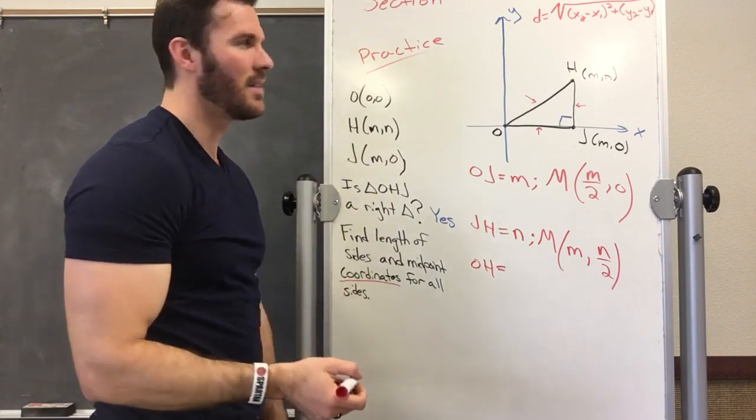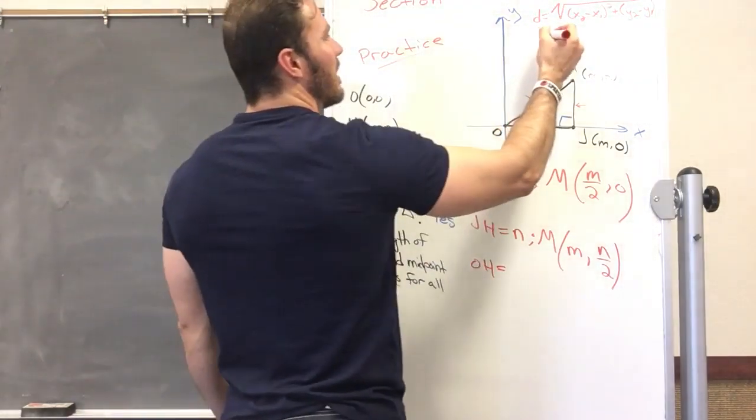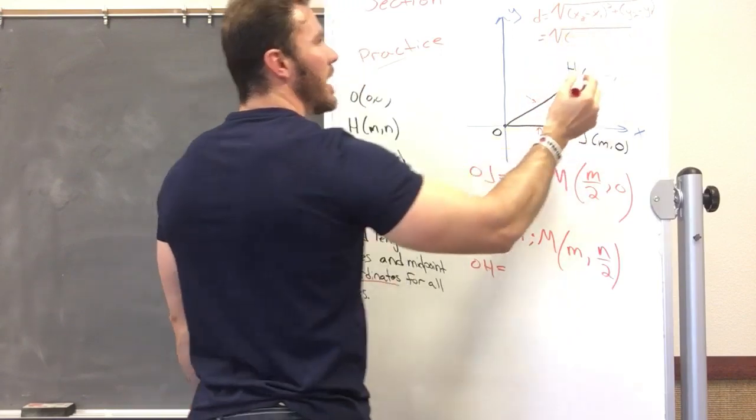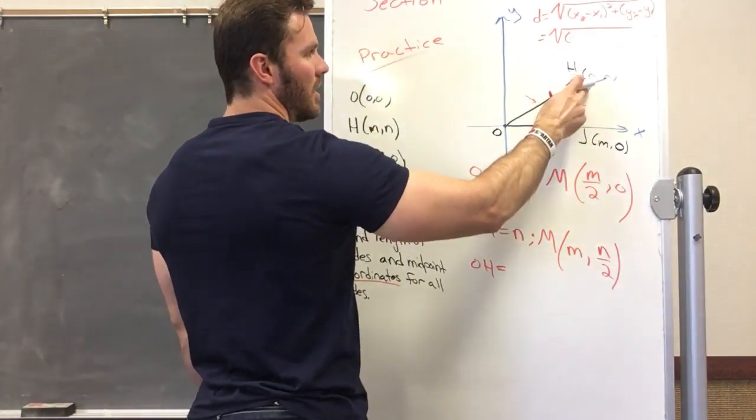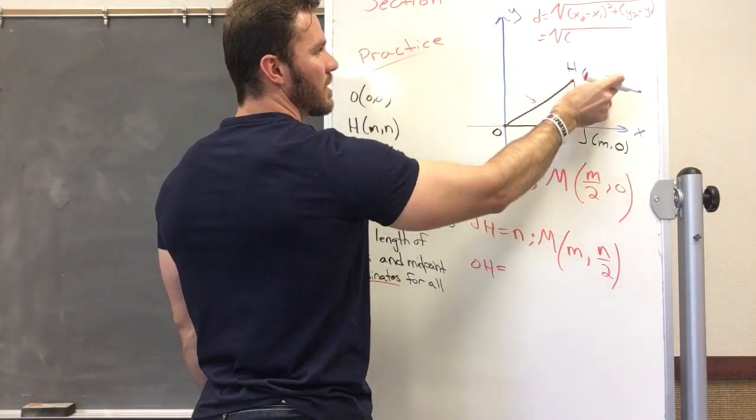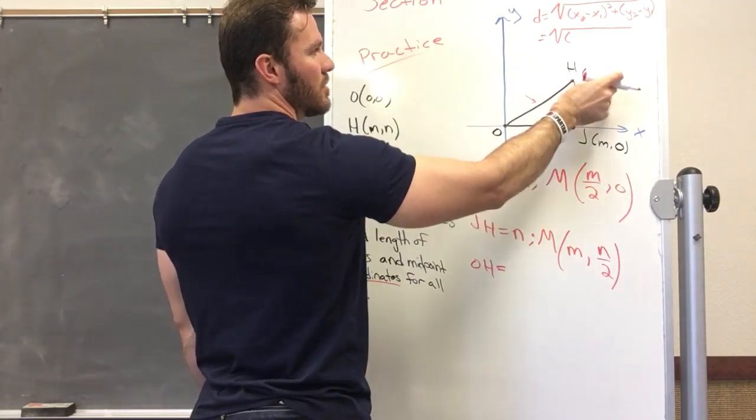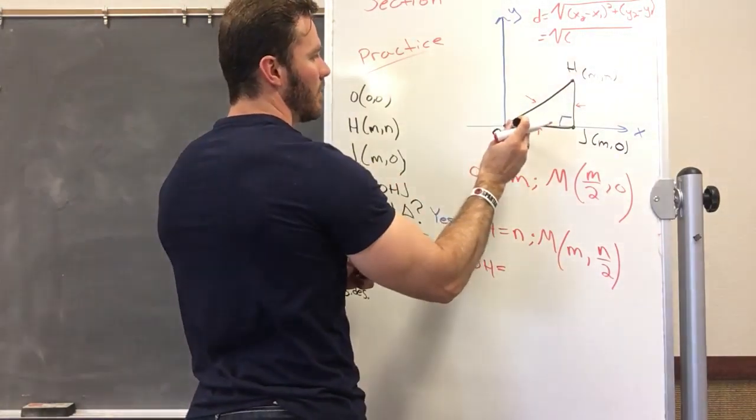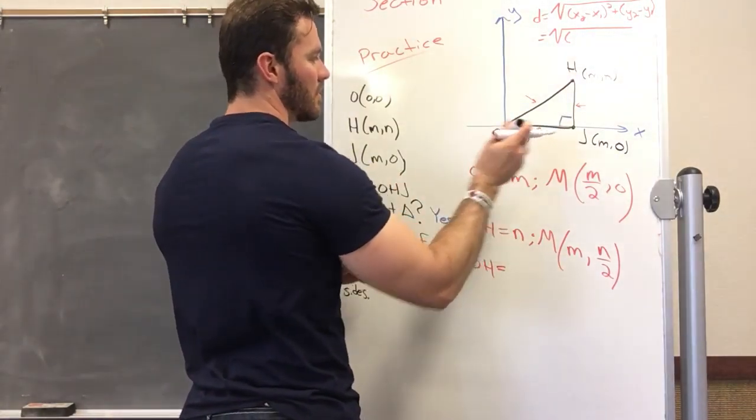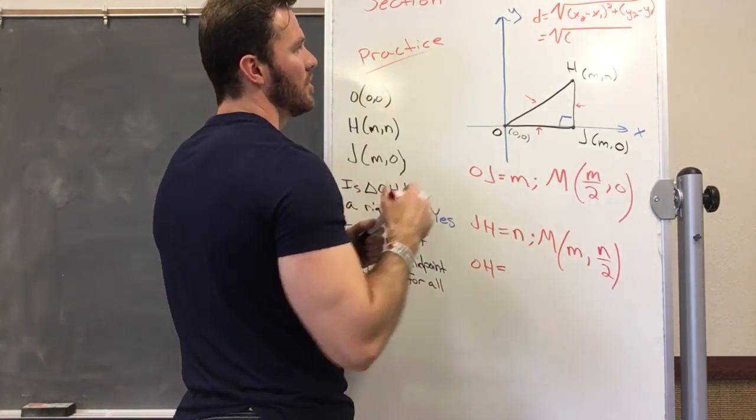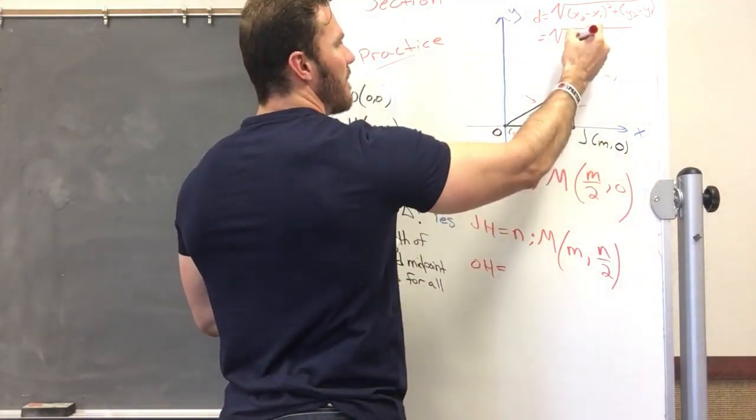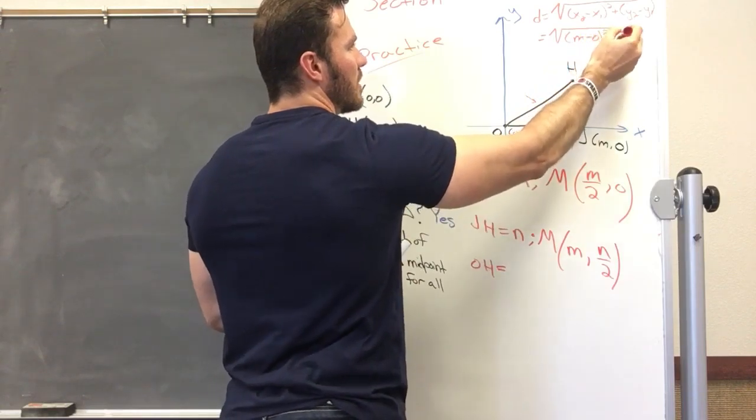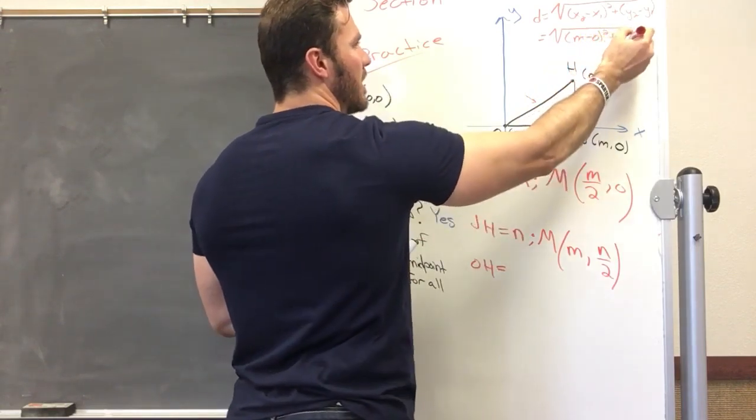Alright, let's use (M, N) as x2, y2, and (0, 0) as x1, y1, because that would be much easier since these are zeros. So x2 is M minus x1, which is 0. Y2 is N minus 0.